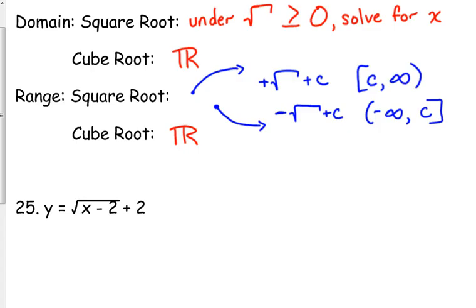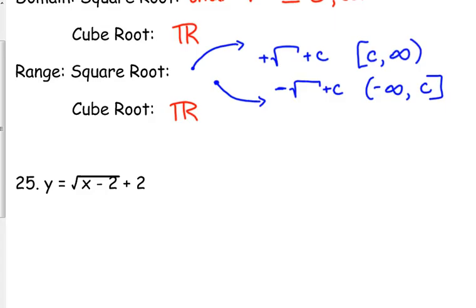So number 25 there on your worksheet, it is a square root, so for the domain, we take what's under the square root, set it greater than or equal to 0, and solve for x. So our domain is x is greater than or equal to 2, so in interval notation, that would be from 2 to infinity.